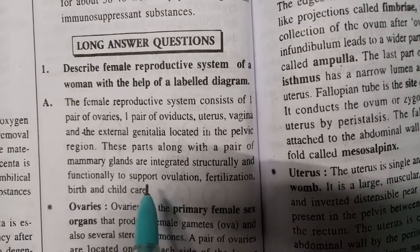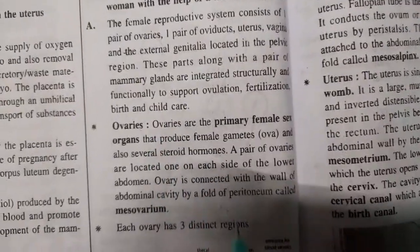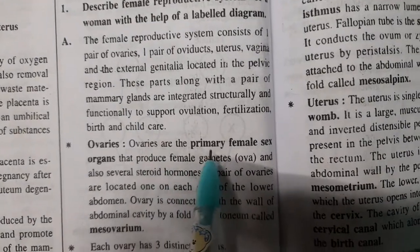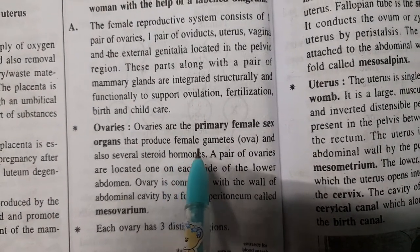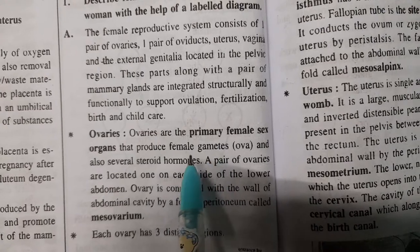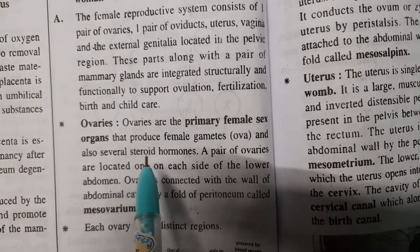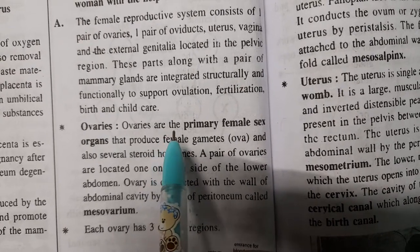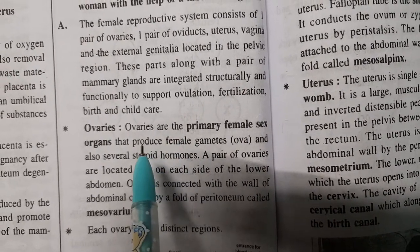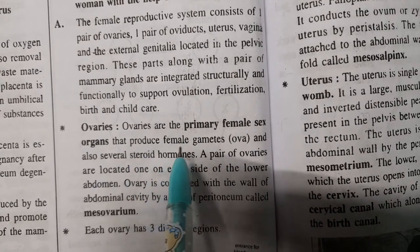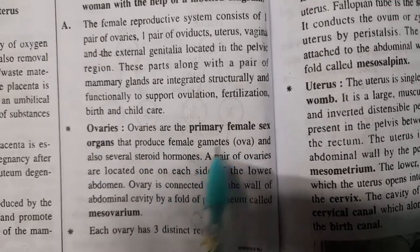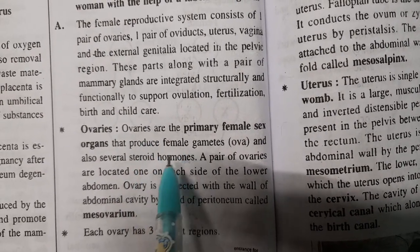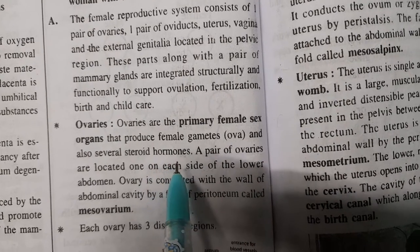Ovaries are the primary female sex organ. They produce female gametes called ova, and they also produce several steroid hormones, also called ovarian hormones, like estrogen and progesterone. There are a pair of ovaries.